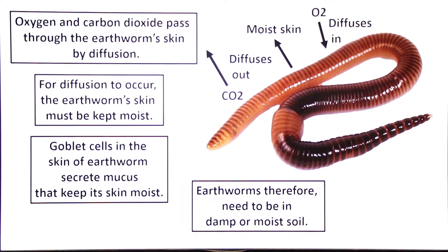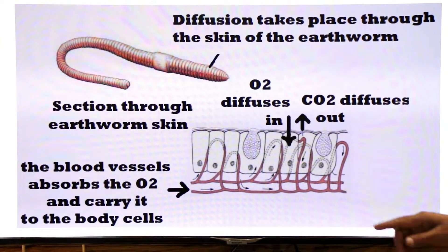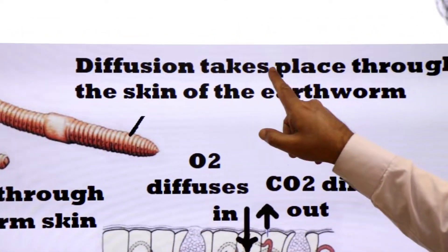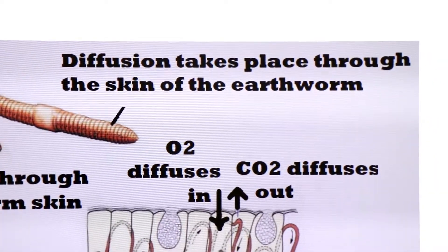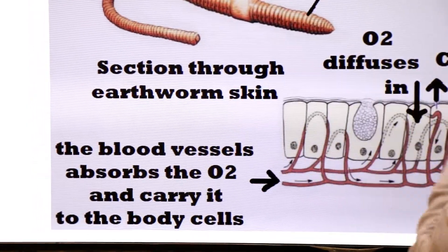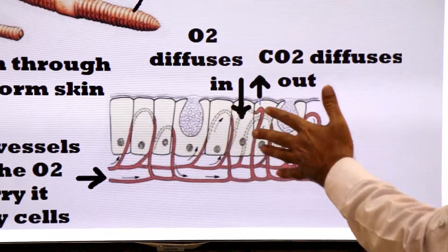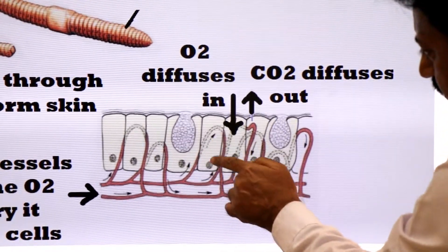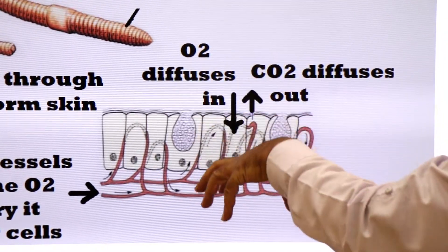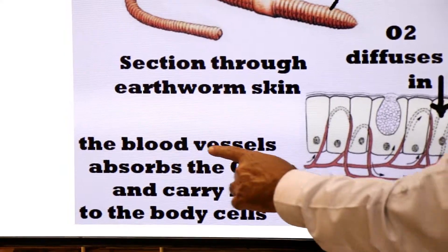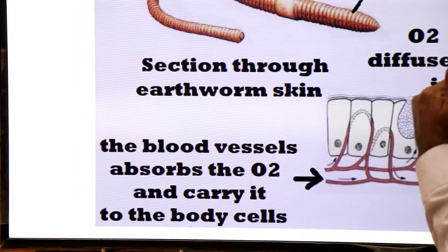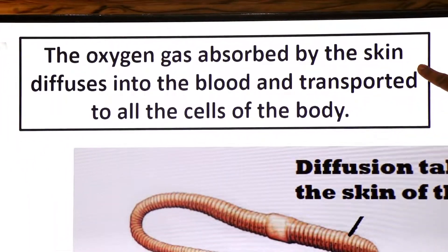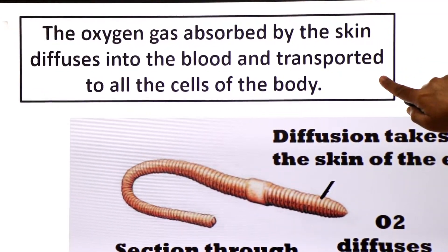Ab hum mechanism padhenge — how gases are exchanged across the moist skin. Here is the image of the earthworm and its moist skin, and here you see the section through the earthworm skin. Oxygen diffuses inward through the skin, and the skin is richly supplied with blood capillaries. The blood vessels absorb the oxygen and carry it to the different body cells. So the oxygen absorbed by the skin diffuses into the blood and is transported to all cells of the body.